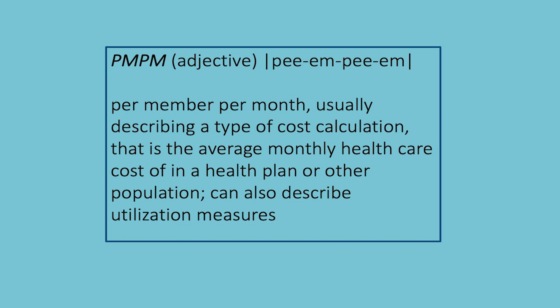For example, a PMPM of $100 would mean that an average member in a health plan or group will incur $100 of costs each month. PMPMs can represent costs across the spectrum of all healthcare services, or they can represent costs for a single type of service, such as our example of office visits.